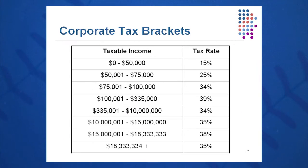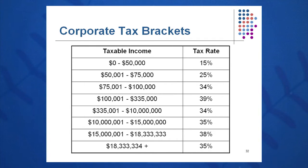The first $50,000 of taxable income, as you can see on this chart, is taxed at 15%. The next $25,000 is taxed at 25%. The next $25,000 is taxed at 34%, and so on down the table. All of these average out — if you were to do a weighted average across all tax brackets, you'll calculate an average of about 35%.